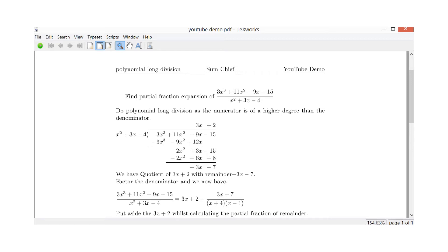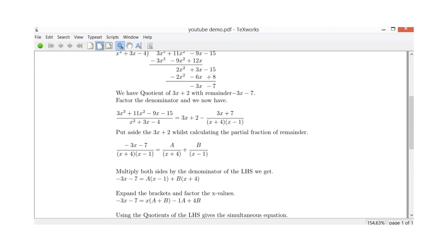So now what we find is, this minus 3x is of a lower degree than the x squared. So that brings us to the end of the polynomial long division. So our quotient is 3x plus 2. And our remainder is minus 3x minus 7. So our original question here, is equal to 3x plus 2, which is our quotient. And our remainder, which is minus 3x plus 7, divided by x plus 4, x minus 1.